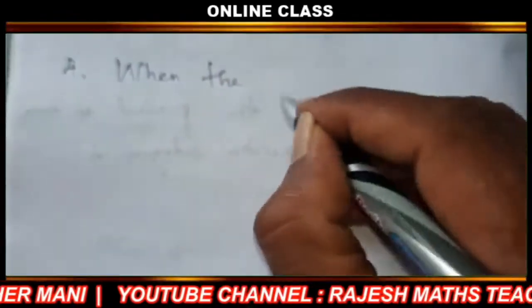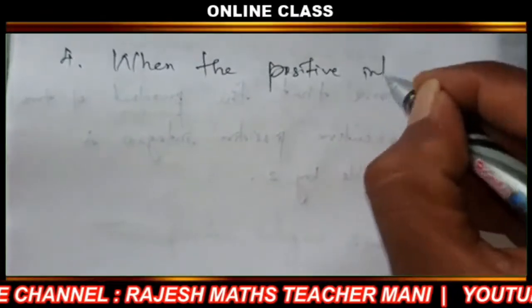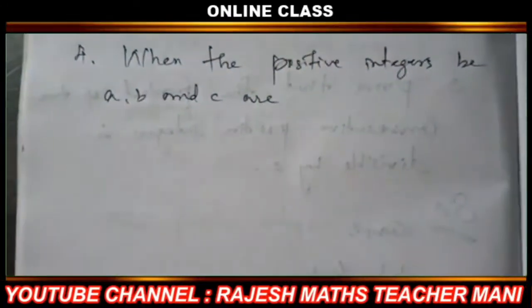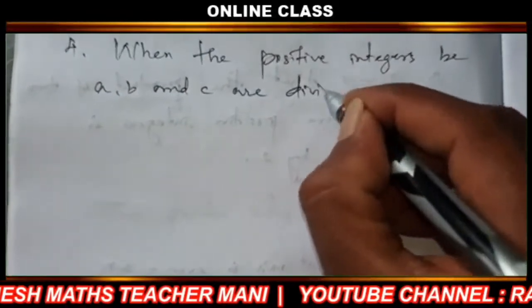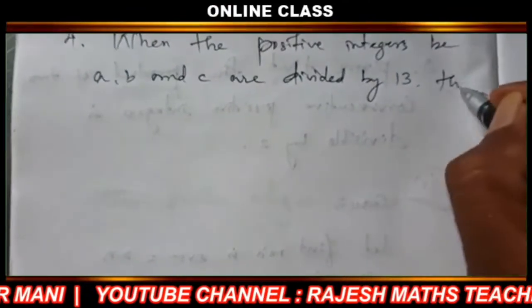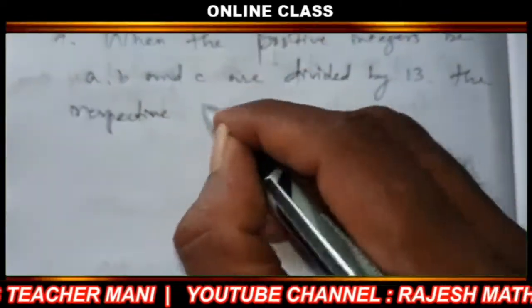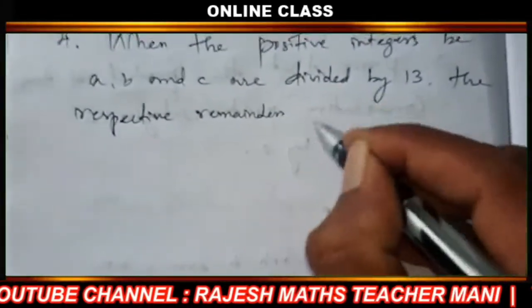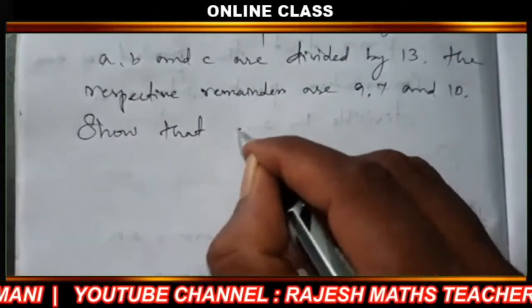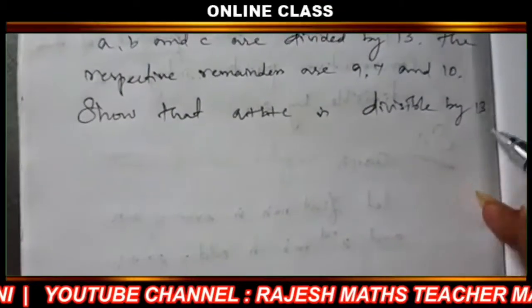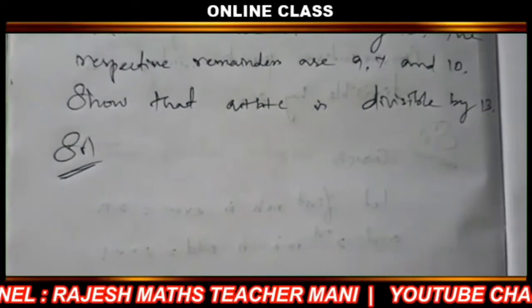This is question number 4 from exercise 2.1. When the positive integers a, b, and c are divided by 13, the respective remainders are 9, 7, and 10. Show that a plus b plus c is divisible by 13.